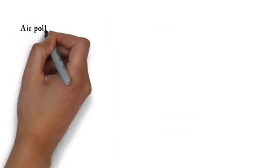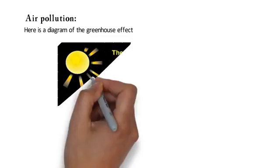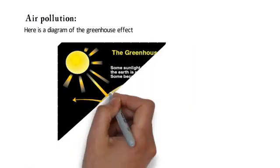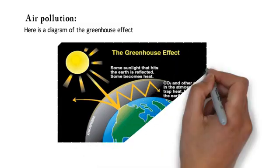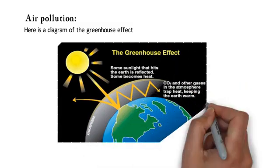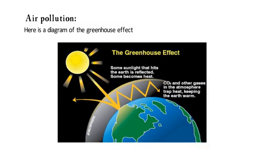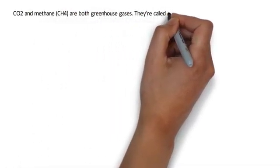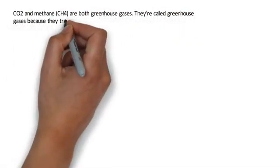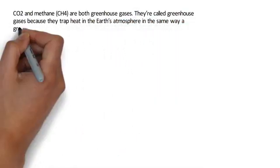Air pollution. Here is a diagram of the greenhouse effect. Some sunlight that hits the earth is reflected, and some becomes heat. CO2 and other gases in the atmosphere are greenhouse gases. They are called greenhouse gases because they trap heat in the earth's atmosphere in the same way that a greenhouse traps heat.